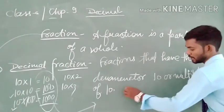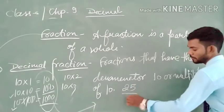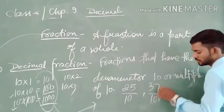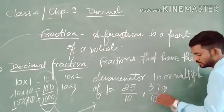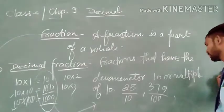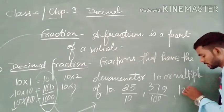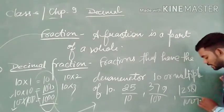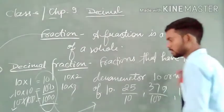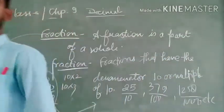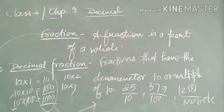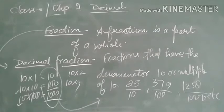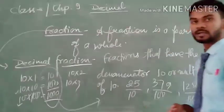So if I write examples: 25 upon 10, 37 upon 100, 339 upon — and 1,258 upon 1,000, and so on. These are the examples of decimal fractions.